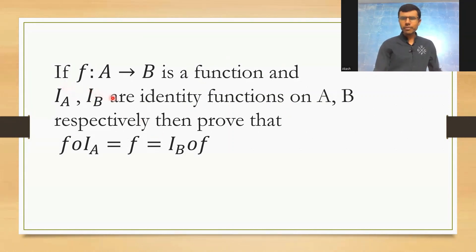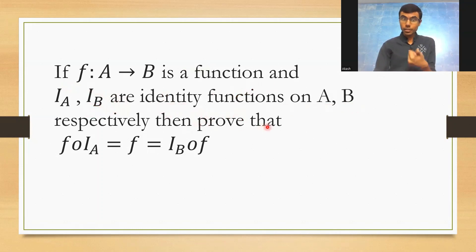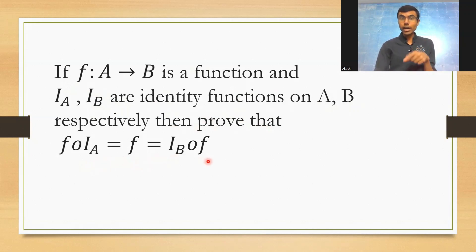If f maps A to B is a function and iₐ, i_b are identity functions on A and B respectively, then show that f∘iₐ is equal to f, which is equal to i_b∘f.